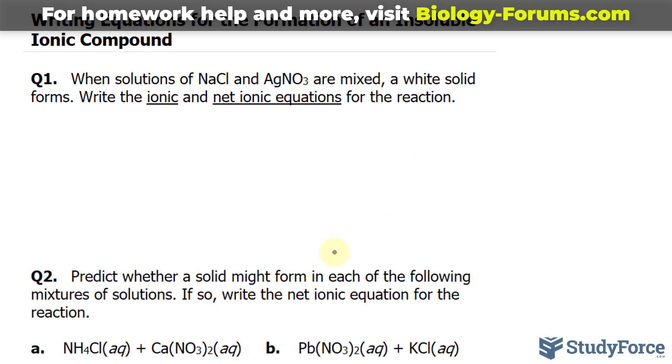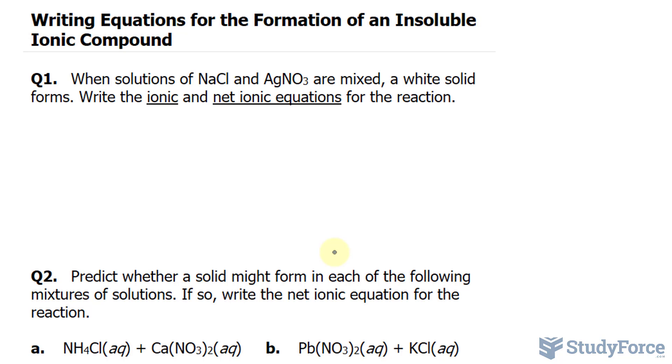I want to begin by writing out the chemical equation for the mixture of sodium chloride and silver nitrate. So we're taking sodium chloride and adding silver nitrate to that. We end up forming NaNO3, and NaNO3 is actually soluble, so we'll write down aqueous.